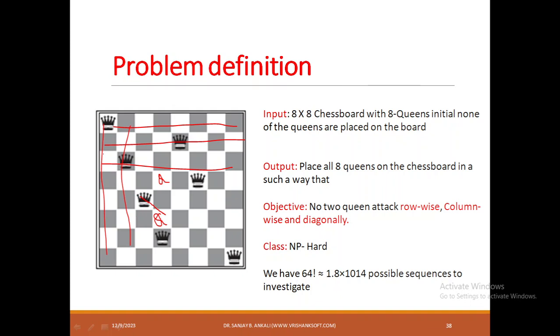I just repeat: 8 rows, 8 columns with 8 different queens. You have to place all these queens in such a way that no two queens attack row-wise, column-wise, or diagonally. This problem belongs to NP-hard.